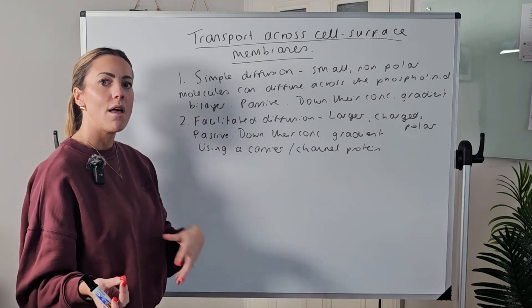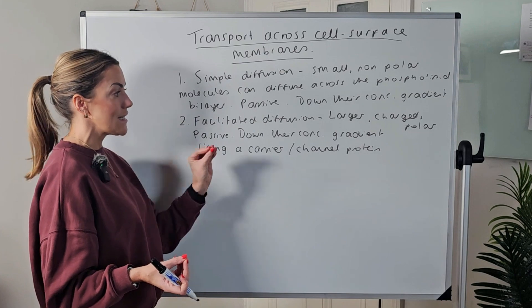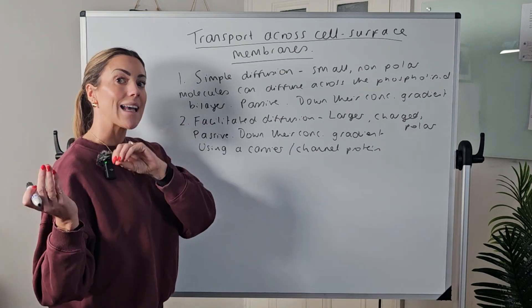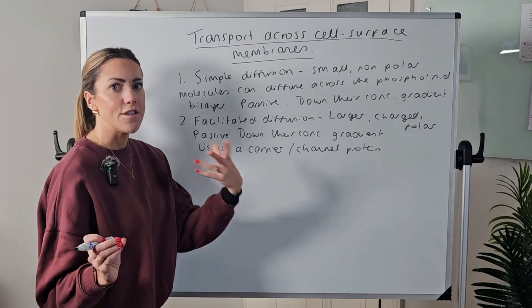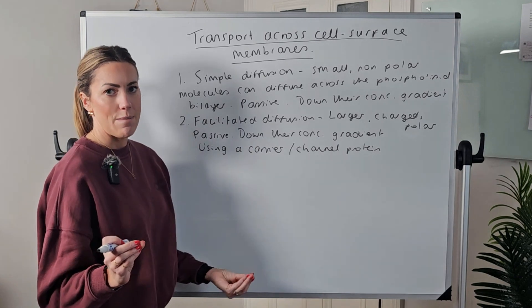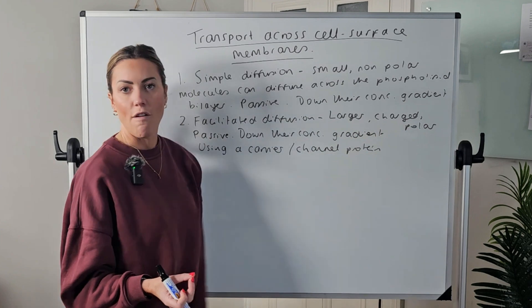A carrier protein is a little bit different because it does change shape to move the molecule across the bilayer. But for A-level we can just say that facilitated diffusion can use either a carrier protein or a channel protein, but the substance is not just diffusing through the phospholipid bilayer because it can't because of the nature of that molecule.